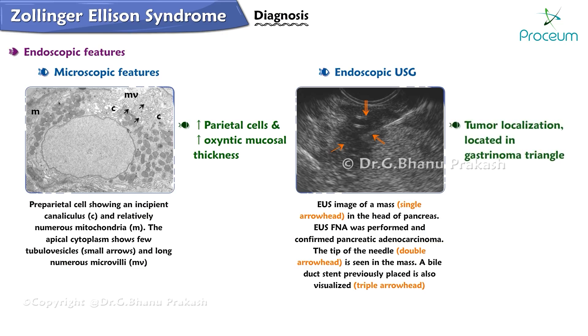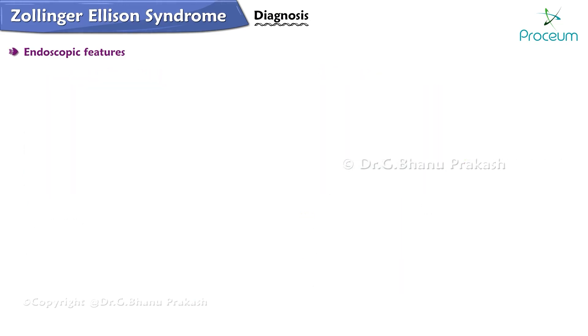Endoscopic ultrasonography helps in tumor localization, with gastrinomas usually located in the gastrinoma triangle. Ectopically, gastrinomas can be seen more commonly in the mesentery than in the ovaries or testes.